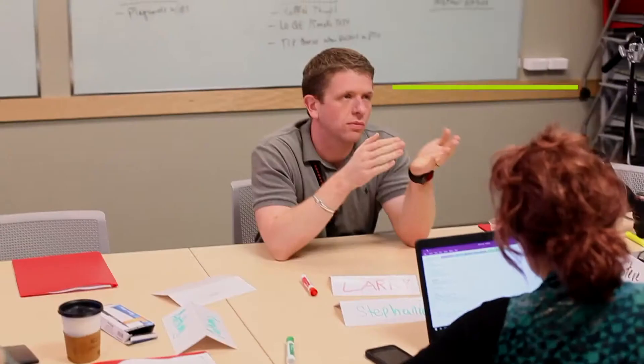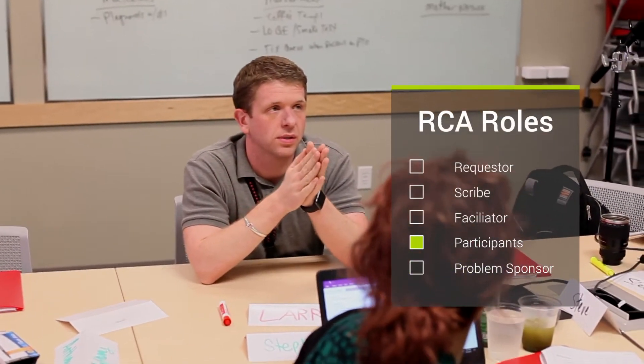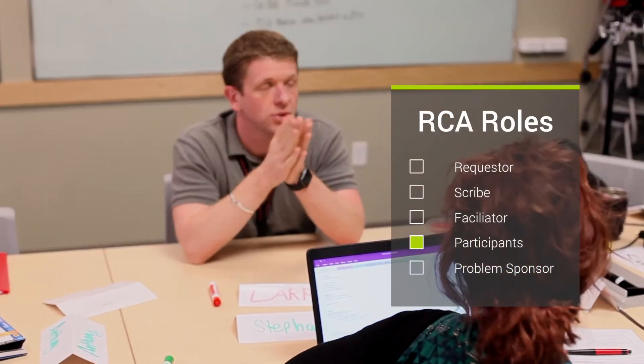The other members sitting around the table are participants, and those are some really important people — sometimes that's the person who pulled the wrong plug. It could be an account manager who tells us what the customer is looking for. But over all of that is what we call the problem sponsor: a director and above who has taken ownership of this and will carry it through from start to finish, meaning all the actions are complete and leadership has been briefed.